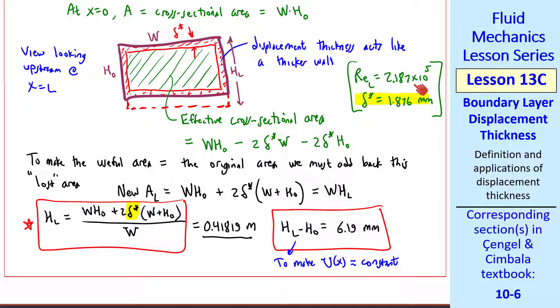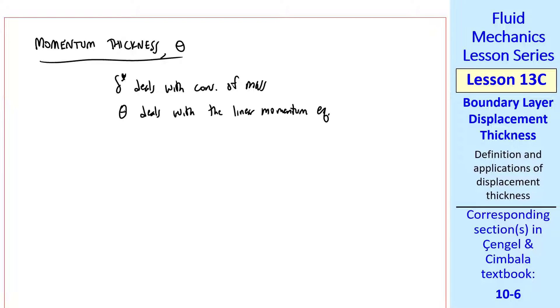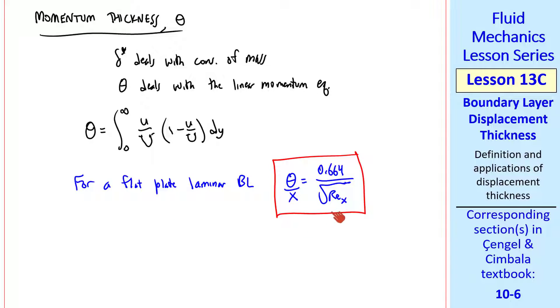I note that this Reynolds number is kind of borderline between laminar and turbulent. We'll repeat this problem in the next lesson when we talk about turbulent boundary layers. Finally, I talked briefly about momentum thickness, which is given the Greek symbol theta. Delta star deals with conservation of mass, whereas theta deals with the linear momentum equation. Again, I won't derive it. You can look at the textbook for details. It turns out that theta is similar to delta star, except for this extra u over capital U in the integral. For a flat plate laminar boundary layer, it turns out that theta over x is 0.664 over the square root of REx. This equation is the same form as delta and as delta star, except with a different constant. It turns out that theta is less than delta star, which is in turn less than delta.